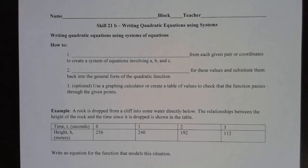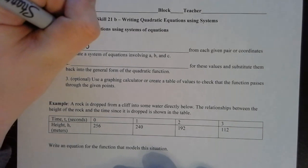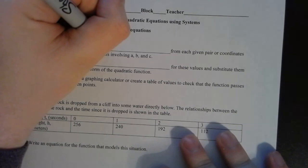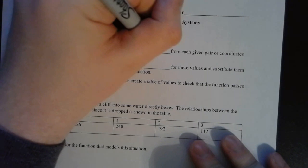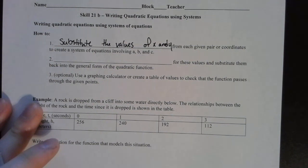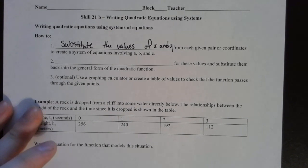Today we're going to be talking about writing quadratic equations using systems. So we've been talking about writing quadratic equations. This time we're applying the old skill of systems of equations to come up with what those A, B, and C values are.